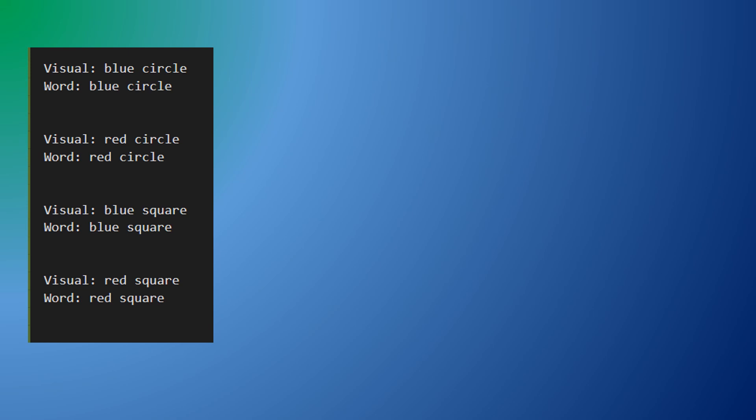Each line in this text file represents a cycle of the neuron engine so in this file the first cycle fires the blue and circle neurons in the visual module and the next line fires the blue and circle neurons in the word module.